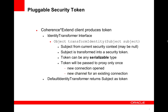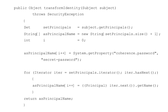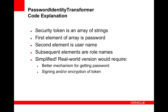The default identity transformer simply returns the subject that it's passed. This code shows a simple implementation of an identity transformer that passes a password — a way of password-protecting a Coherence proxy. So the token is essentially a password produced on the client. In this particular code, the security token is just simply an array of strings. The first element of that array is the password, the second element is the username, and then there are some role names that are passed along. Of course, this is very simplified — you would not normally pass a password in clear text over the network, but this is just to show you how to hook things in.